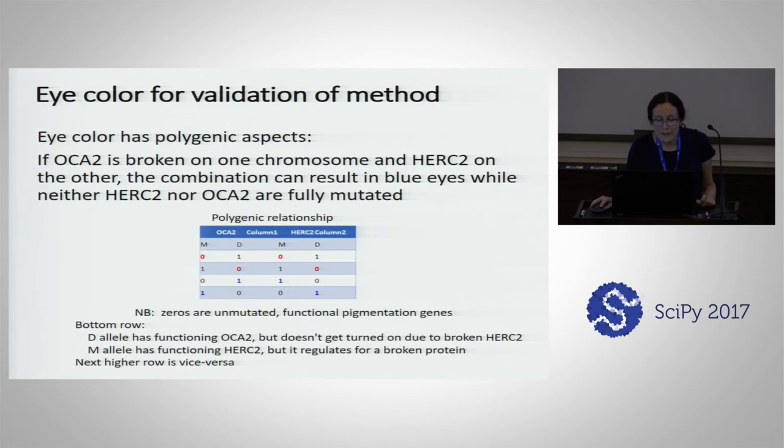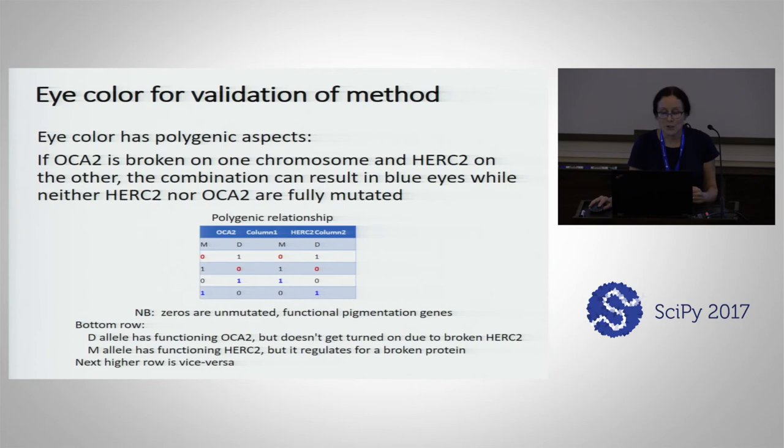This is hard to detect because when OCA2 has one mutated allele and HERC2 has one mutated allele, two of the four combinations give you brown and two give you blue. On the dad allele we have HERC2 is broken. It's hard to detect compound heterozygous traits, and it's hard to detect polygenic traits.